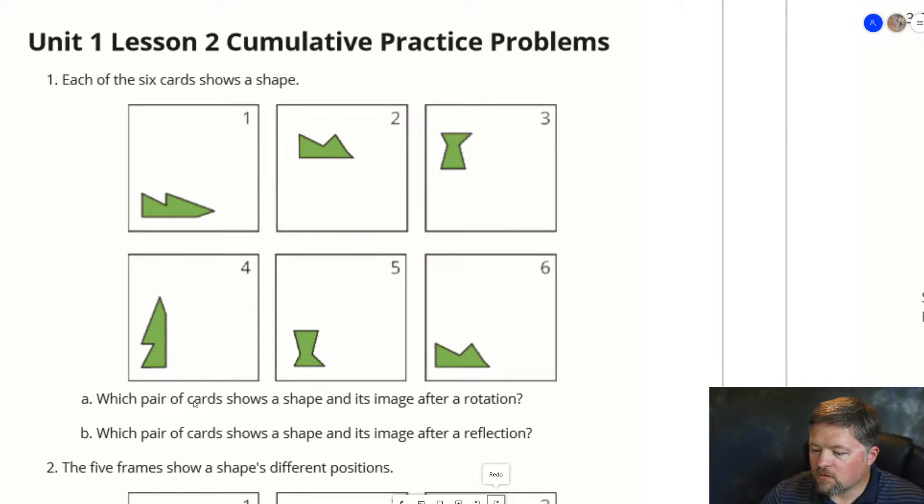So, a pair of cards shows a shape and its image after a rotation. So, rotating, spinning. 1 and 4. So, these do look like a rotation.